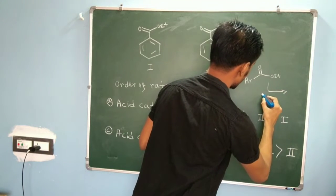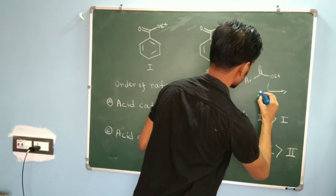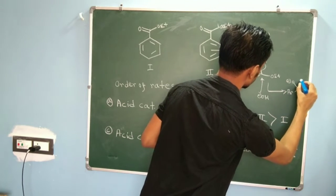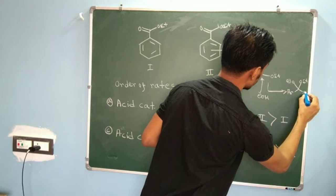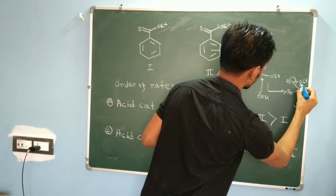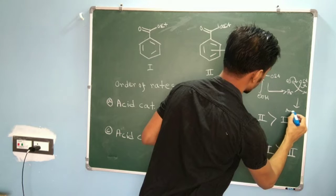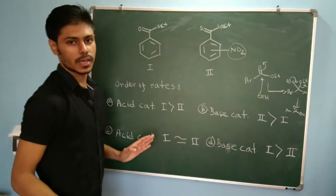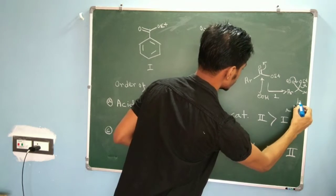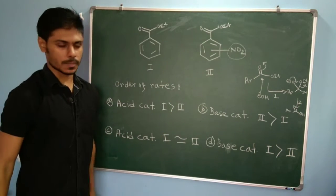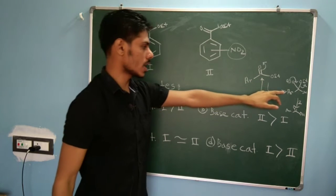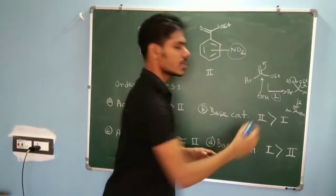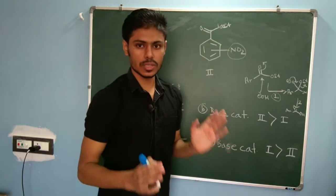In the BAC2 reaction, the hydroxide ion first attacks the carbonyl group to give a tetrahedral intermediate. In the next step, the O minus comes back and the OR group leaves, giving you ArCOO minus. This is step one and step two. The attack on the carbonyl group is the slower step and is therefore the rate-determining step, because as soon as the tetrahedral intermediate forms it immediately collapses.